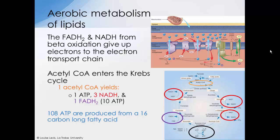In a bit more detail: beta oxidation — the breakdown of a fatty acid chain — produces acetyl-CoA, NADH, and FADH. The acetyl-CoA enters the Krebs cycle, and for each turn of the Krebs cycle you get three NADH, one FADH, and one ATP. The NADH and FADH give up their electrons to the electron transport chain, and ATP is produced in the exact same manner as for glucose metabolism. To give you an idea of the yield, you get 108 ATP from a 16-carbon-long fatty acid.